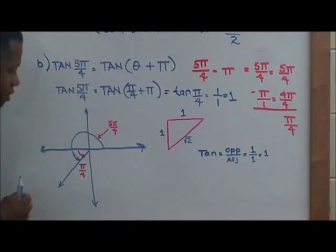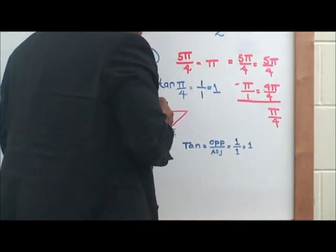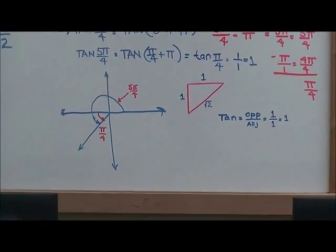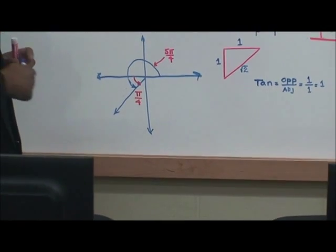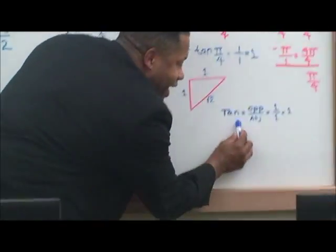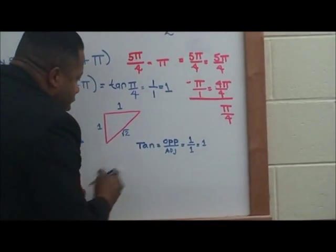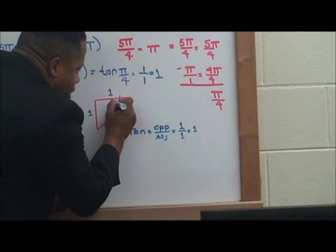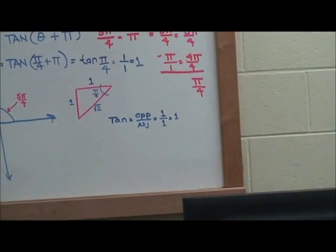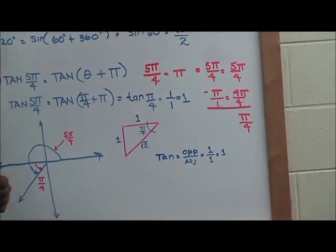The reference angle is calculated: 5π over 4 minus π gives you π over 4, which is 45 degrees. Tan is opposite over adjacent. Here's the triangle being sketched — we have π over 4, which is 45 degrees. The opposite side over the adjacent side is 1 divided by 1, so that exact value is 1.